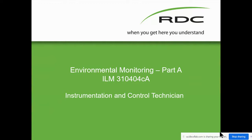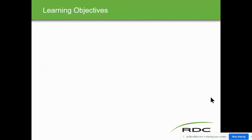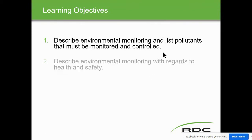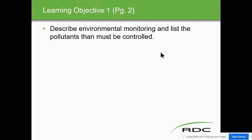Environmental monitoring, Part A, ILM 310404CA. We've got a couple of objectives. First, describe environmental monitoring and list pollutants that must be monitored or controlled. Second, describe environmental monitoring with regards to health and safety — that's our health and safety, mostly as instrument techs. On page two, we have the start of it.